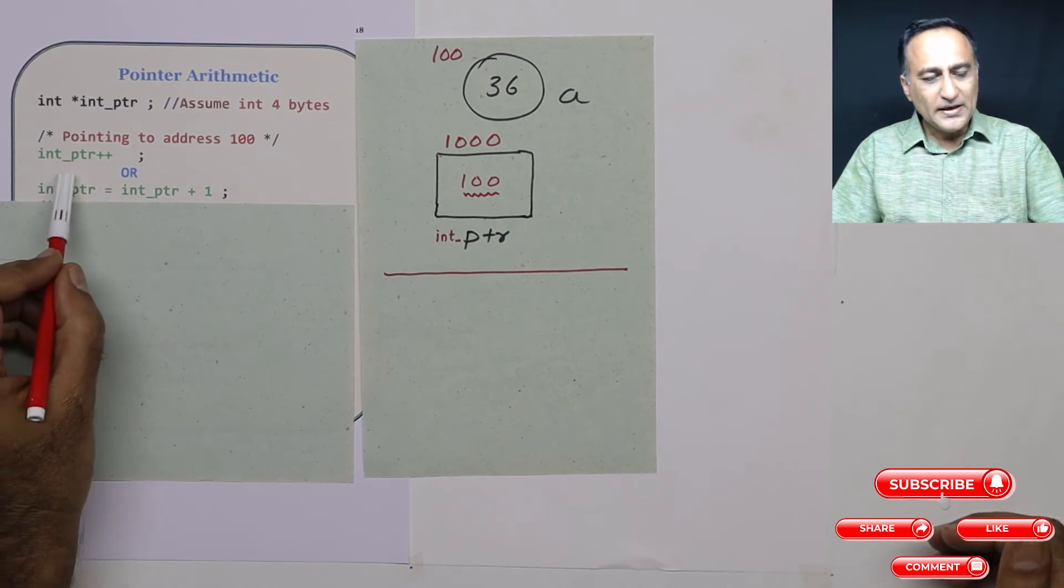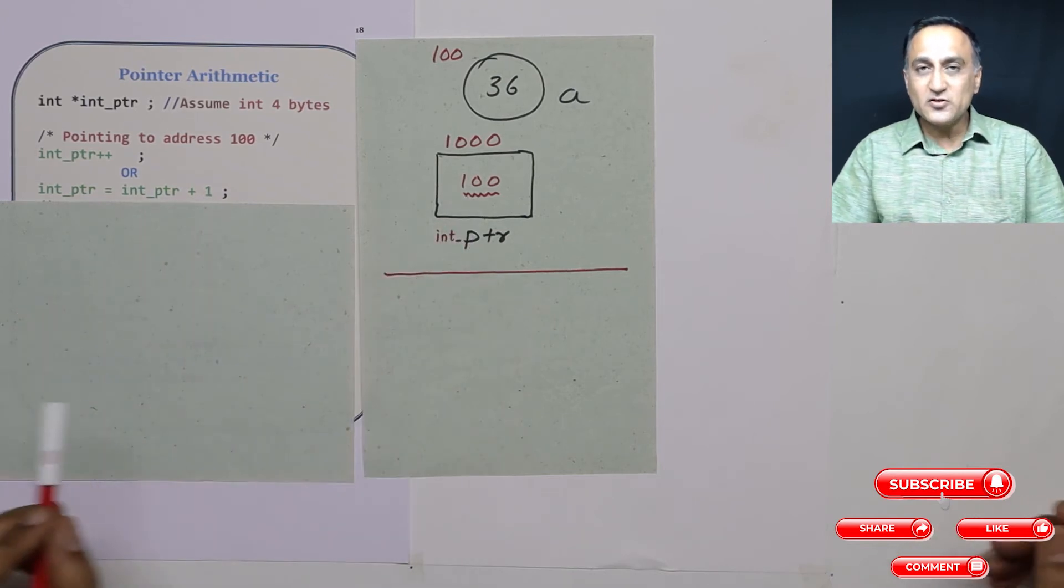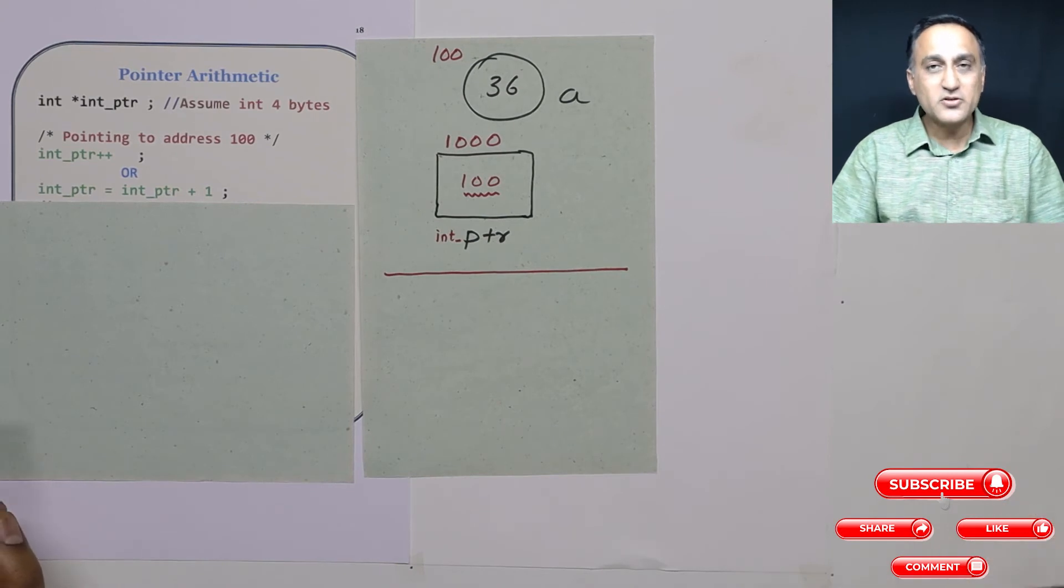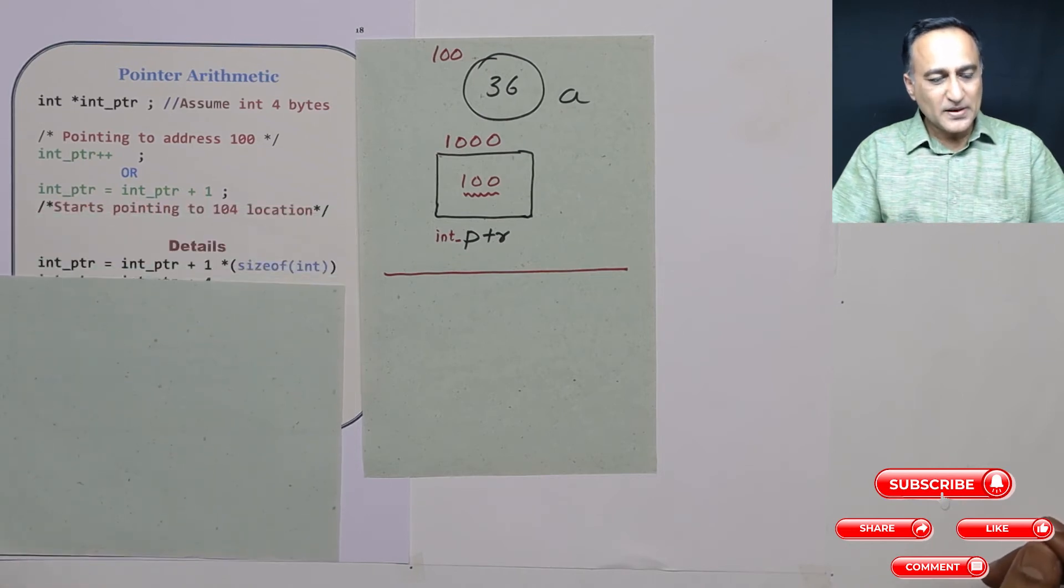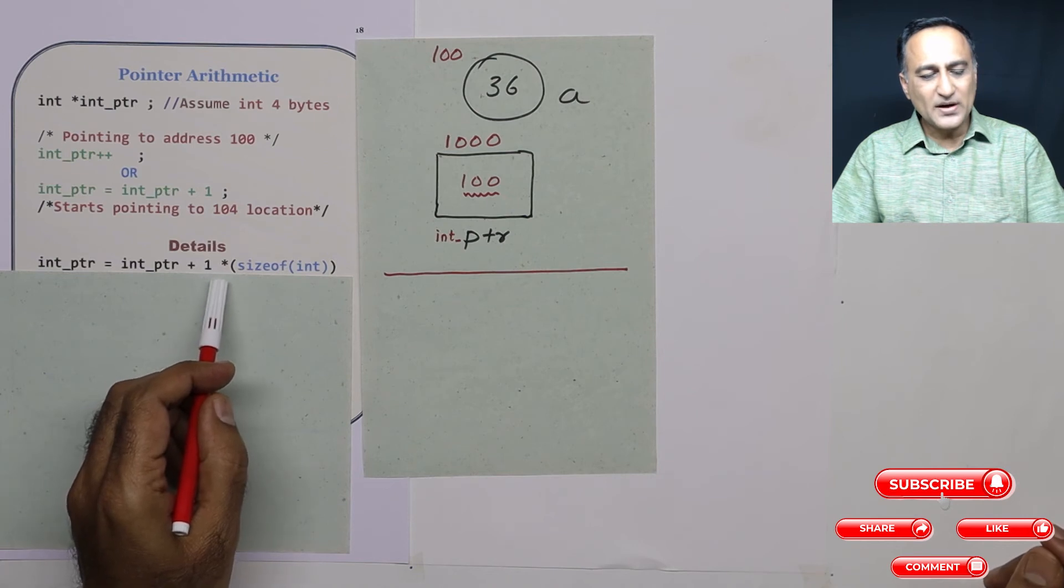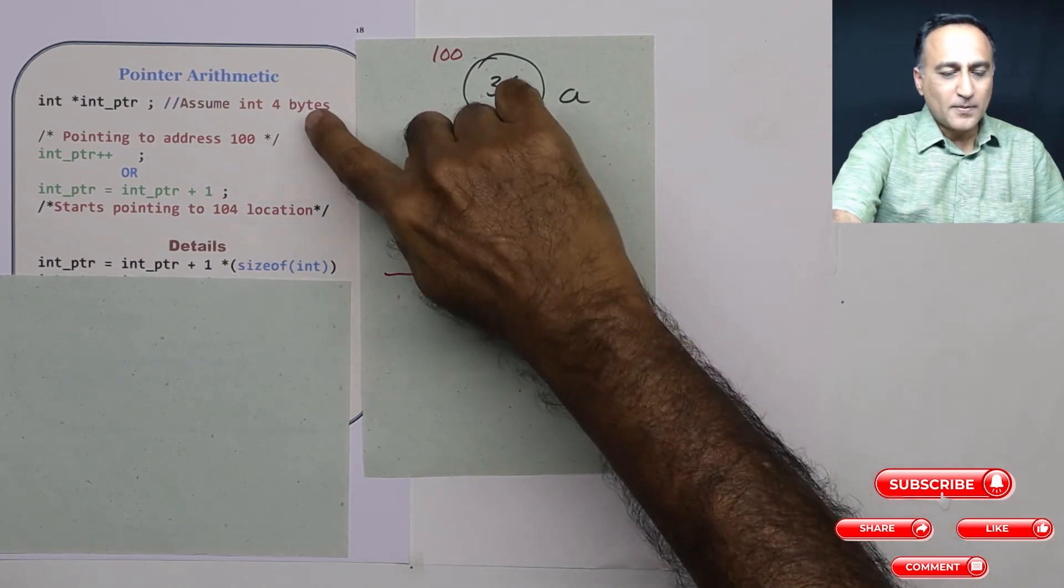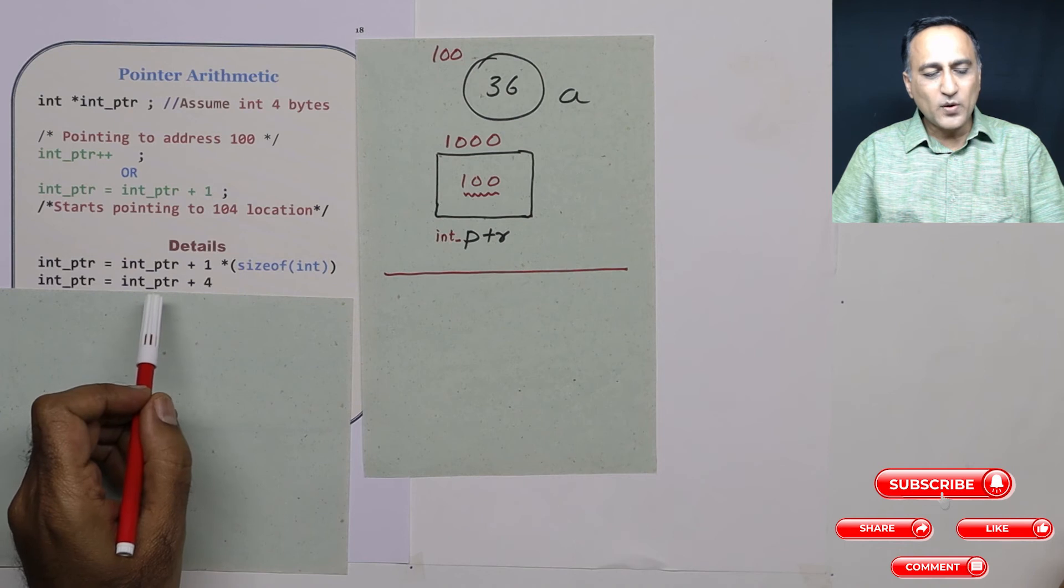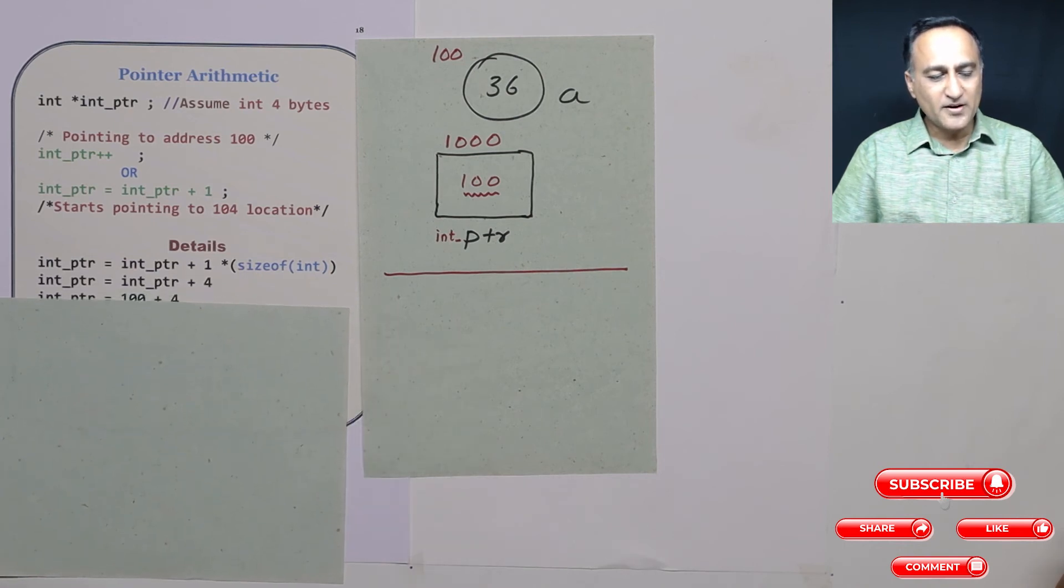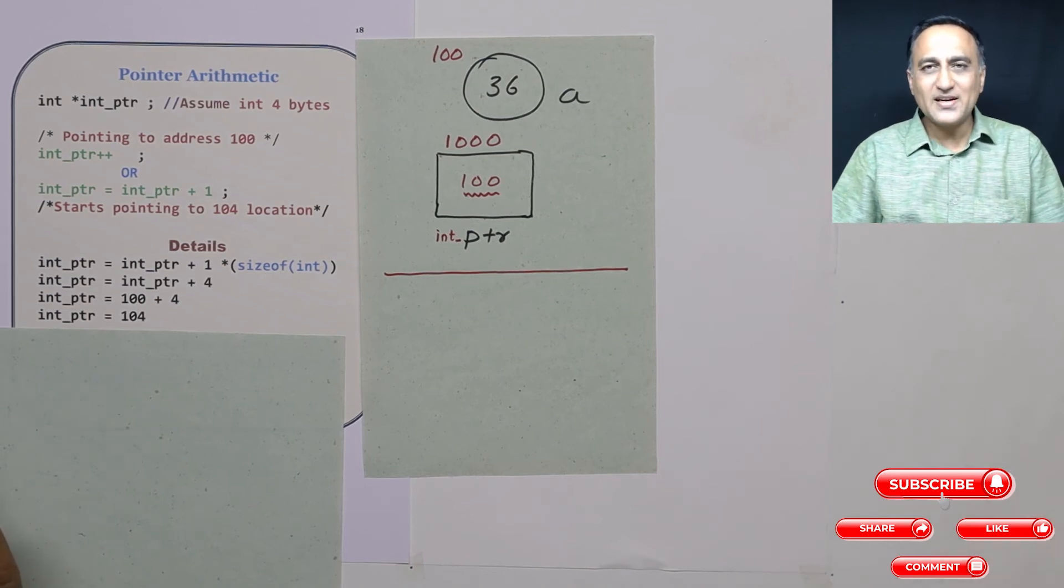Now when I do int pointer plus plus or I say int pointer is equal to int pointer plus 1, from 100 it is not going to end up becoming 101. Because this is not your normal maths. In pointer arithmetic something different happens. So let me explain the details. When I say int pointer is int pointer plus 1, that 1 is going to be multiplied by the size of integer. So size of integer on my machine, I am assuming it to be 4 bytes here. So what is going to happen is int pointer is equal to int pointer plus 4. So if you add 1 to int pointer from 100, it is going to be equal to 104. Now if you see this is the value of int pointer as 104.